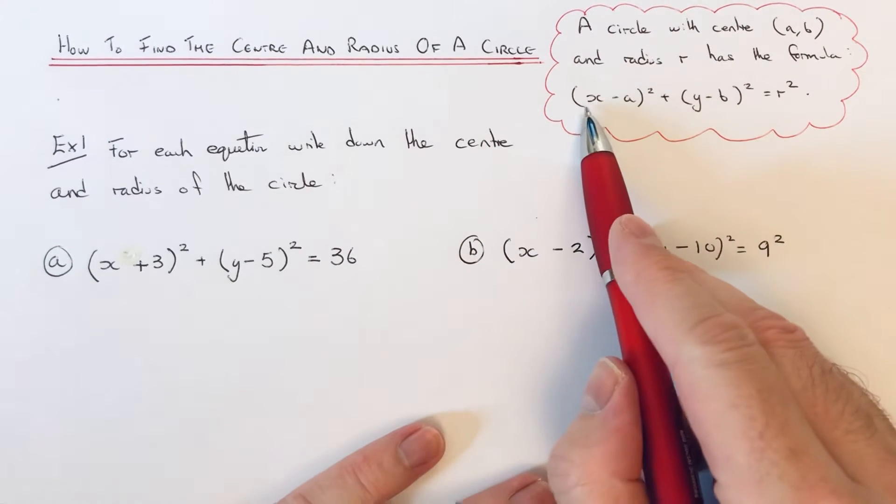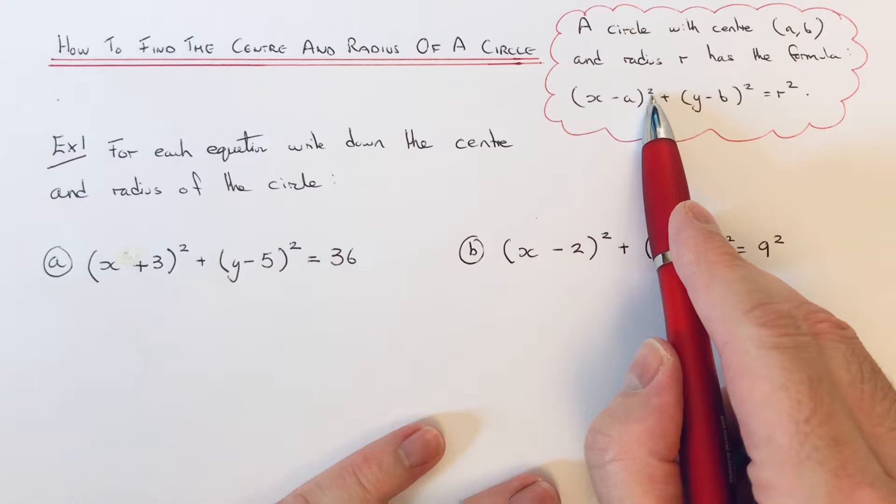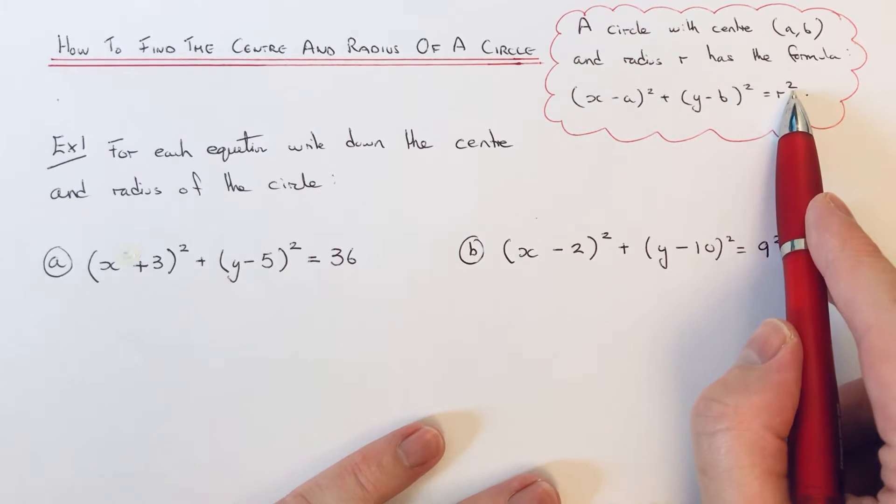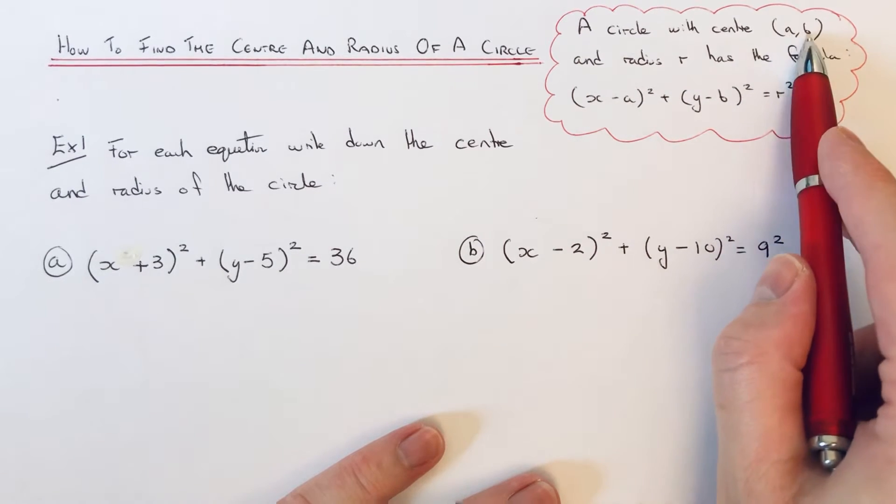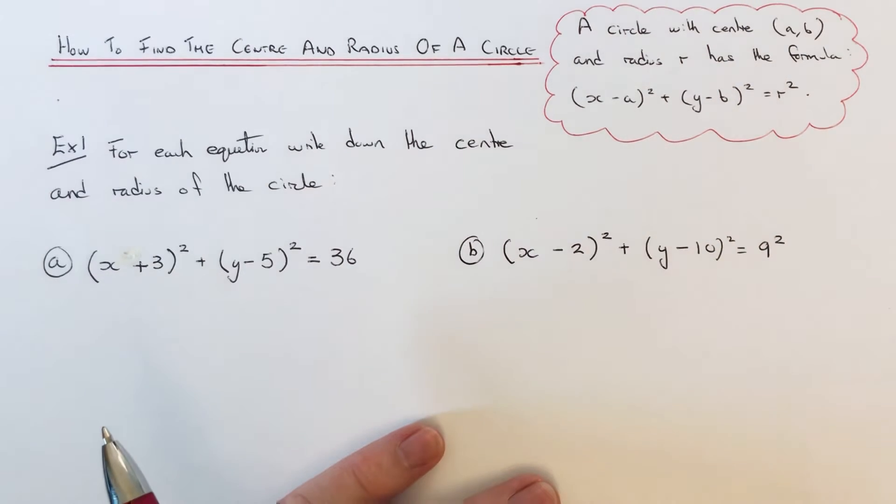And the equation will be in the form x minus a squared plus y minus b squared equals r squared, where a and b is the coordinates of the centre of the circle and r is the radius of the circle.